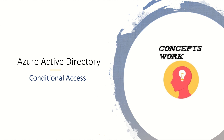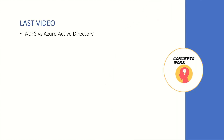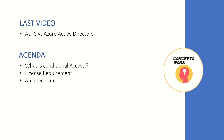Hi everyone, welcome back to our series on Azure Active Directory. In this video I'm going to talk about conditional access. In the last video I discussed the basic difference between ADFS and Azure Active Directory, how to access different endpoints, and which endpoints should be accessed by particular applications. By now we have a fair understanding of the entire authentication process, and now we have to move ahead and understand how authorization works in Azure Active Directory — which has been defined as conditional access.